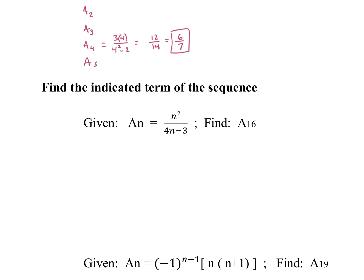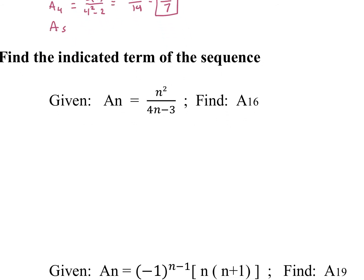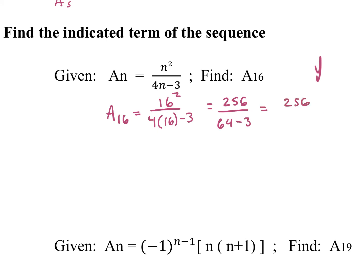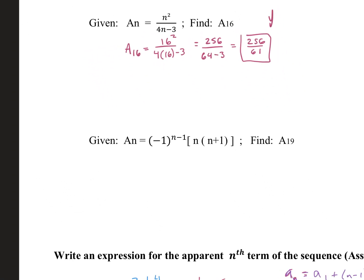Find the indicated term of the sequence here — just looking for the 16th term, so we plug in 16 into all of our n's. So a_sub_16 is equal to 16 squared over 4 times 16 minus 3. On top, 256 over 64 minus 3, so 256 over 61. You can leave your answer as a fraction or put it as a decimal. For the next one, do the same thing — just plug in 19.